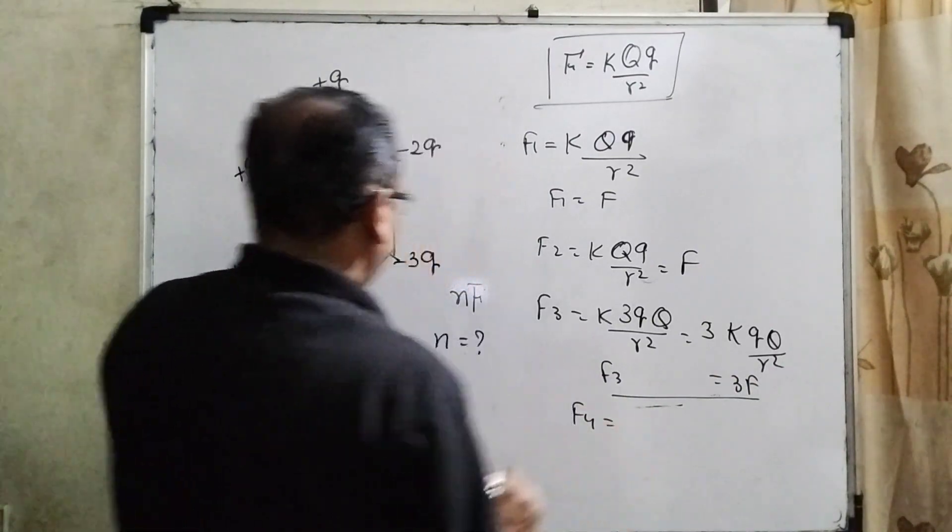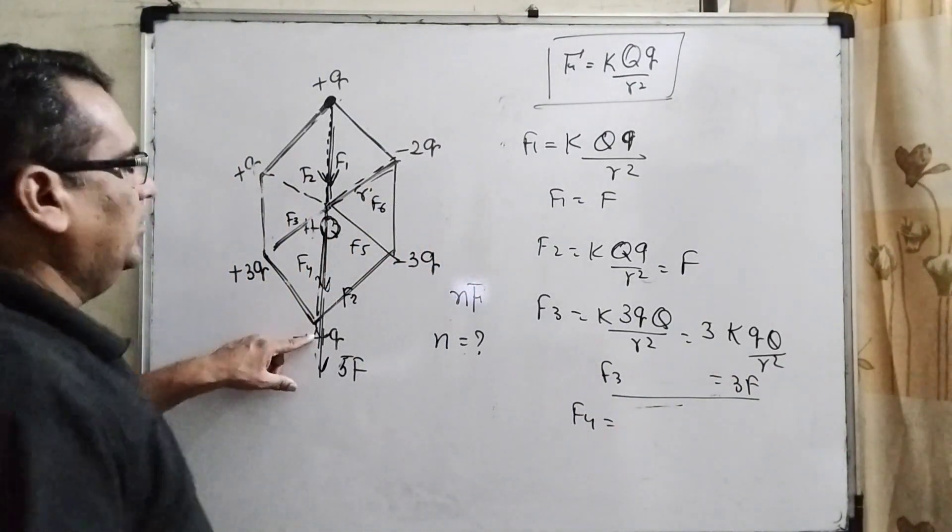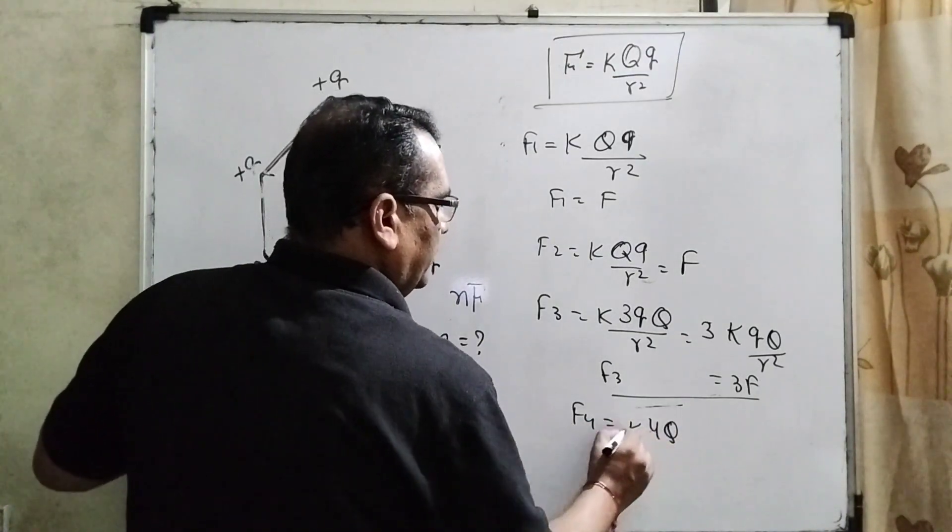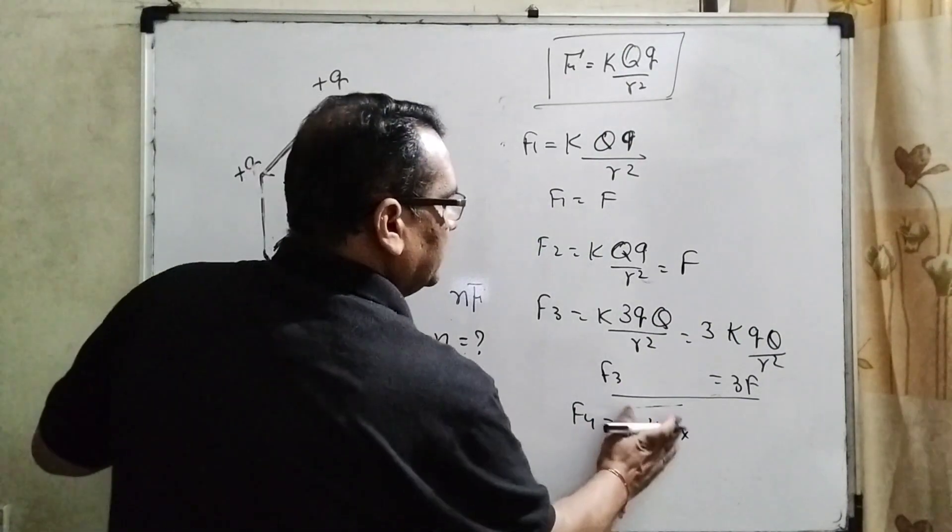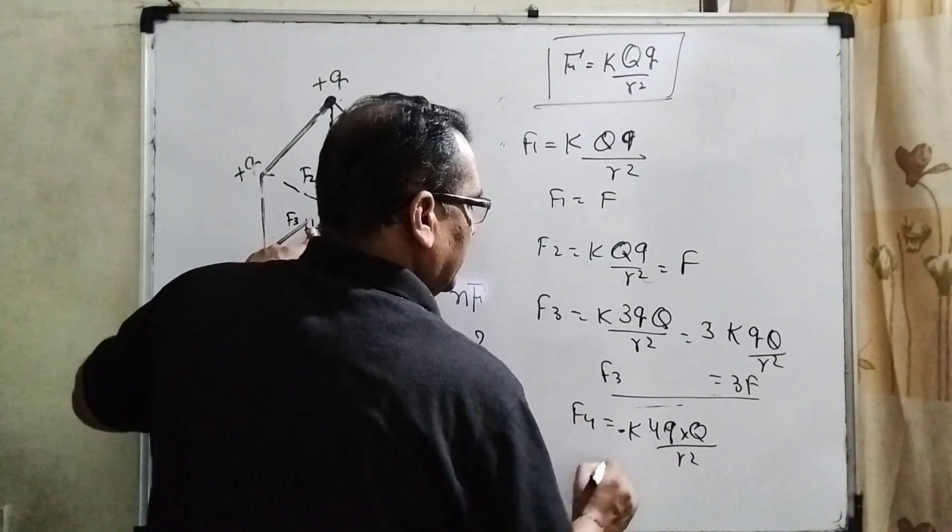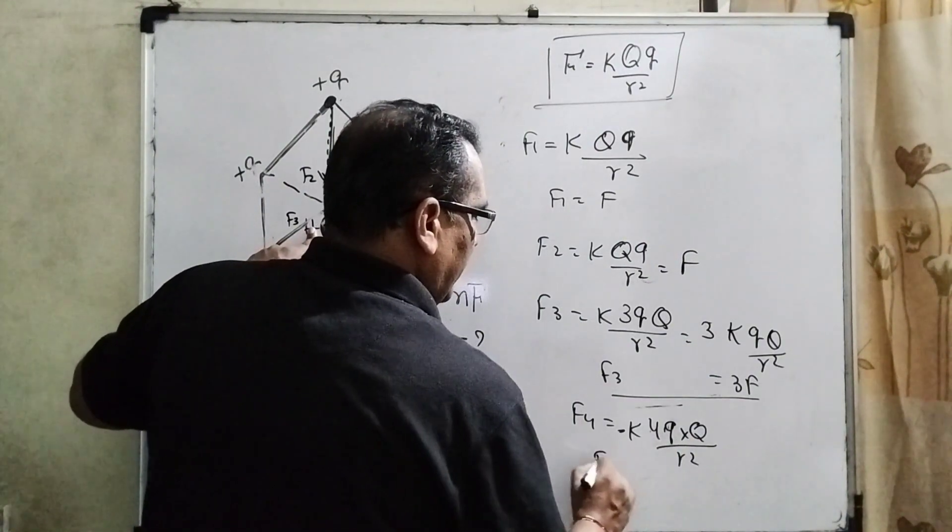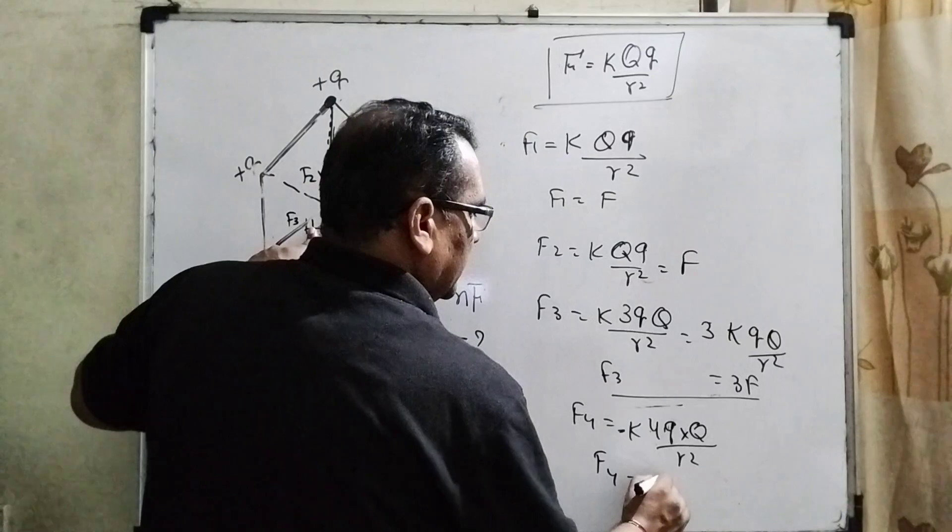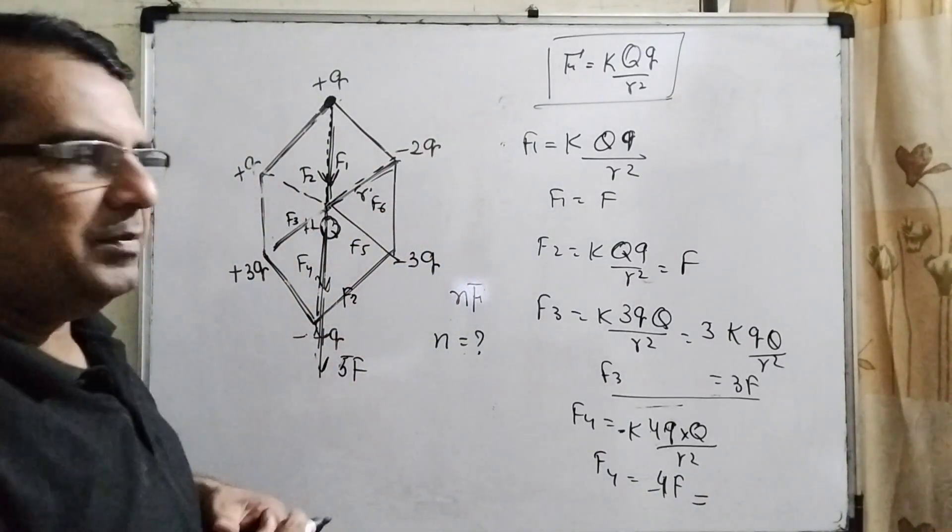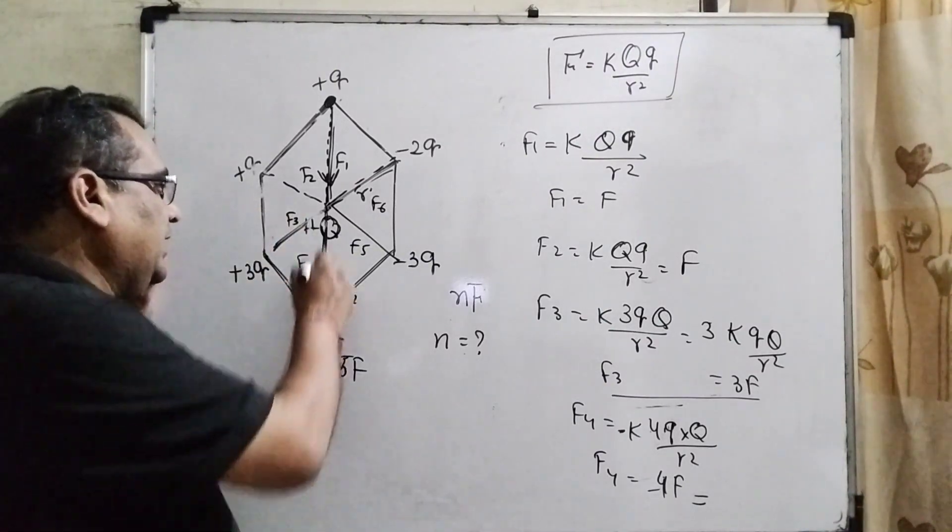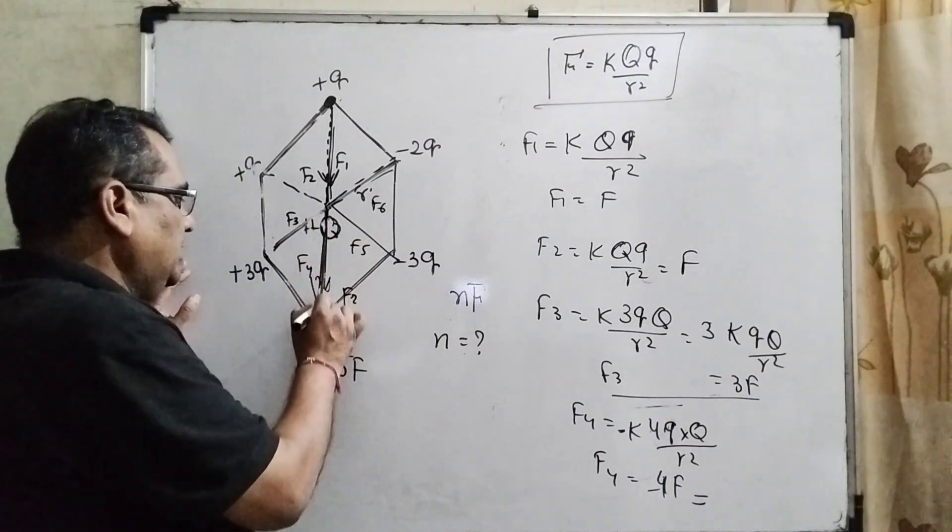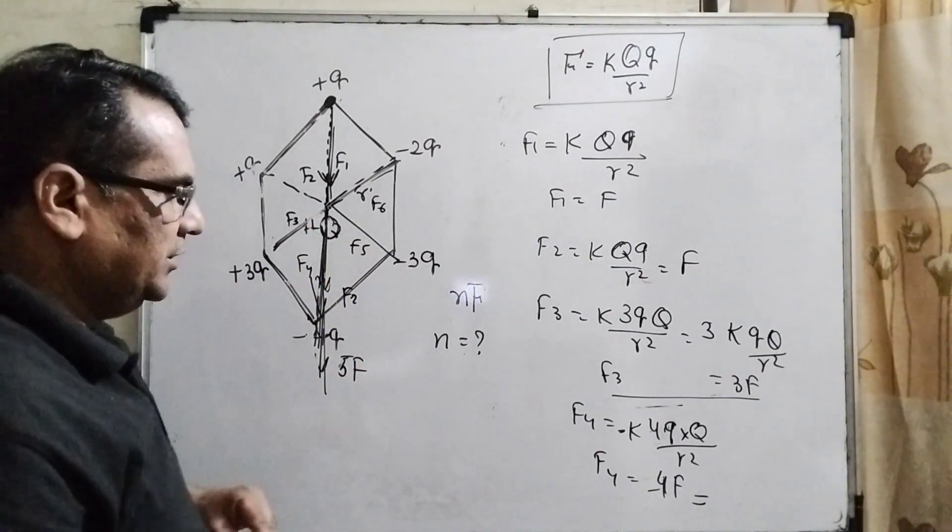Now for F4. So, you can see that F4 is equal to minus 4F. Here minus sign only shows the attraction and repulsion. You can see the direction is always positive to negative. Okay. So, therefore, it is a direction. F4 is in the downward direction. F4.